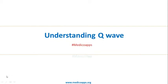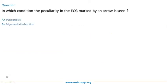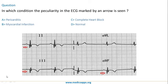A Q wave is any negative deflection preceding the R wave. Let's first look at a question asked about Q waves in the NEET PG exam: in which condition is the peculiarity marked by the arrow seen? The arrow marks a deep Q wave in inferior leads 2, 3, and AVF.